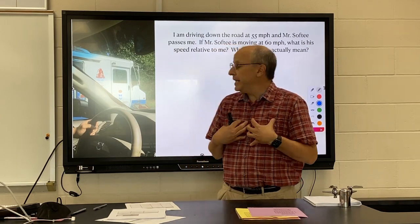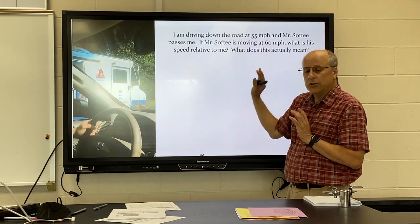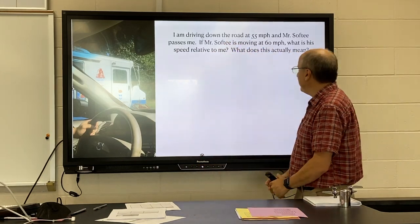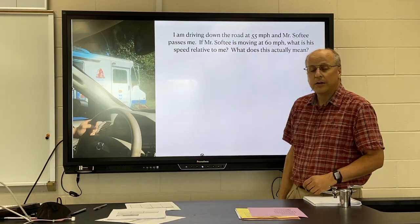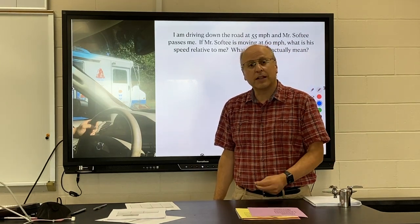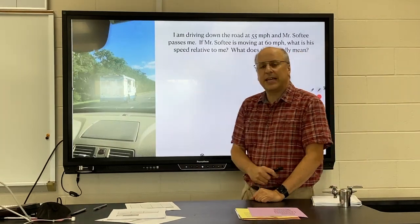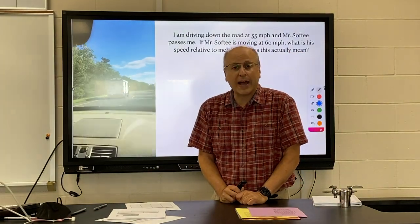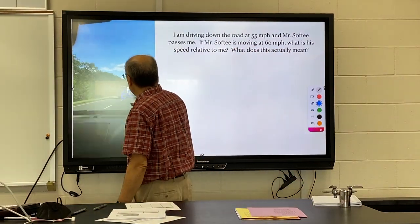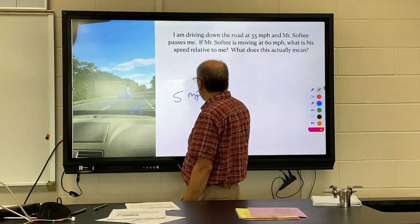I know my speed — 55 miles per hour. Mr. Softee goes past me, so I know he's traveling faster than I am. In this case he's going 60 miles per hour. Since we're moving in the same direction, you subtract the speeds: 60 minus 55 gives us 5 miles per hour.